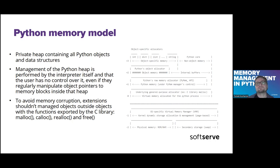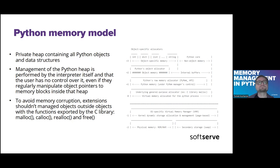Layer plus two also handles the cyclic garbage collector. Layer plus one allows allocation and directly speaks with the OS memory management system. Methods like malloc are wrapped here. The other layers are not as interesting from the Python point of view, so I will omit them.